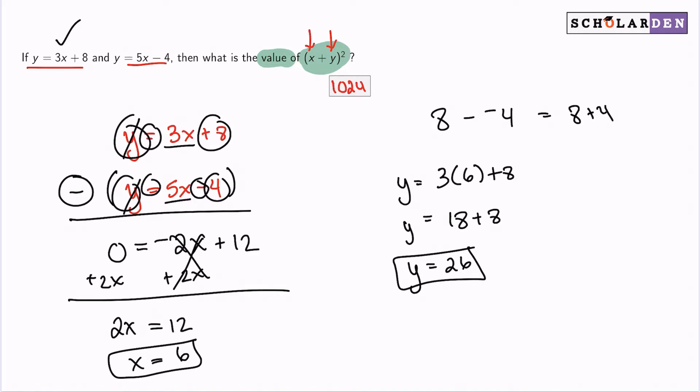So we found our x and found our y. We've achieved our goal. Now we need to use this information to find the answer. So it said x plus y squared. Let's go ahead and grab that right there.